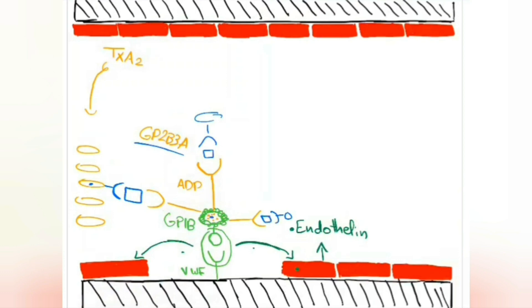This is primary hemostasis, and we have drawn an alien to help you remember it. I'm going to revise the entire pathway through this alien so it helps you remember later. The first step, vasoconstriction through the release of endothelin, represents his arms. The second step, adhesion — the bond between GP1b and von Willebrand factor — is his face. The third step, degranulation — the release of ADP and thromboxane — is his hair. The fourth step, aggregation, is his heart.